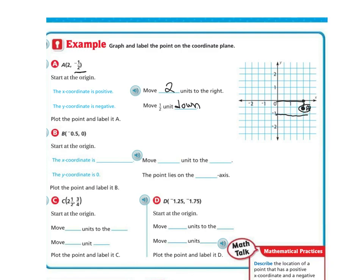Now let's plot point B at negative 0.5 and zero. My x-coordinate is going to be negative, so I'm going to move 0.5 units to the left. The y-coordinate is zero, so the point lies on the x-axis. Since negative 0.5 is halfway between 0 and negative 1, it's going to be right here — that's my point B.